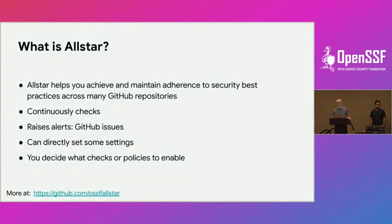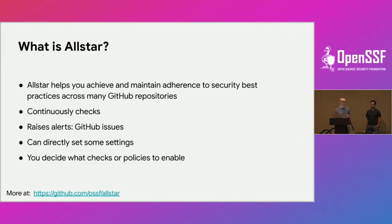AllStar is a GitHub app that continuously checks for security best practices on all of your repositories. It can raise alerts like GitHub issues, or it can actually just fix those settings directly, based on what you decide. You decide what policies to enable. It also extends a little past Scorecard — where Scorecard is objective with best practices from OpenSSF's working group, AllStar is more tweakable, letting you decide what to enforce on your own GitHub repositories.